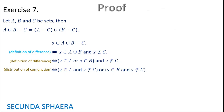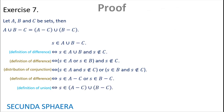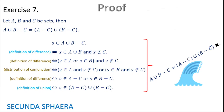Now using the definition of difference again: S is in (A without C) or S is in (B without C). To close the argument, the definition of union is used: S is in (A without C) union (B without C). This completes the argument connected by equivalences, starting with S in A union (B without C) and ending with S in (A without C) union (B without C), proving the equality. This is the end of the proof for exercise number 7.